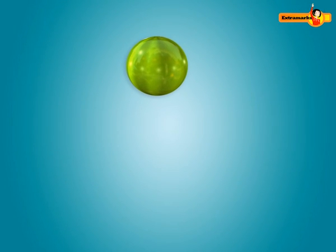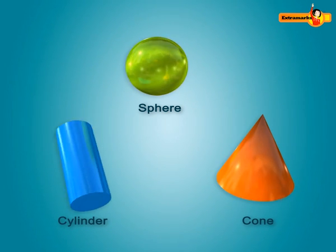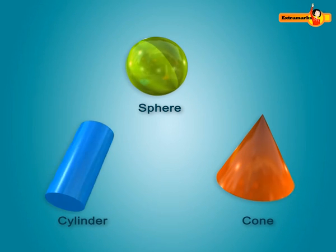A sphere, cone, and cylinder are curved figures, so they neither have straight edges nor any vertices.